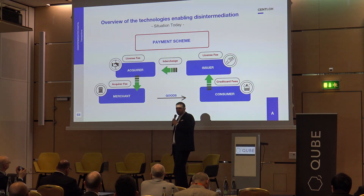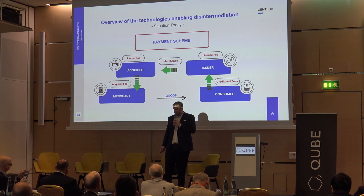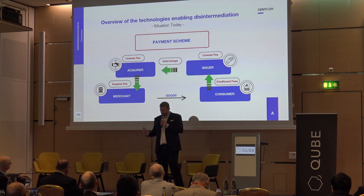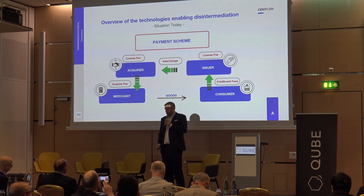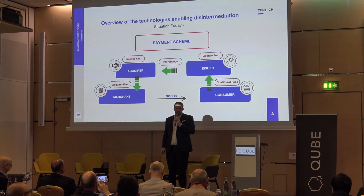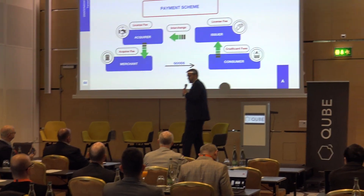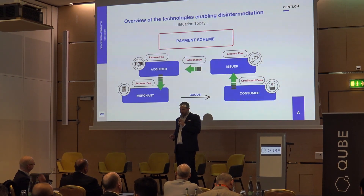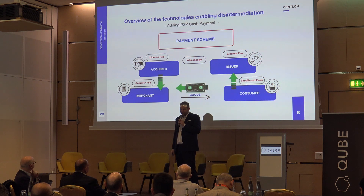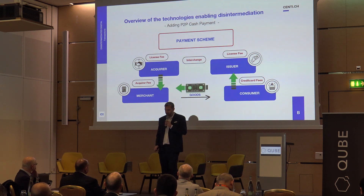That's another representation of the scheme model, which you've all seen before. We have interchange fees, license fees paid to the scheme, acquirer fees, card fees, and probably a few more if you have a PSP in between. The money travels very indirectly and is hugely delayed — some merchants wait maybe two weeks to get their money depending on when the transaction happens. Now, what would happen if we actually just pay directly with cash? What changes in this picture?